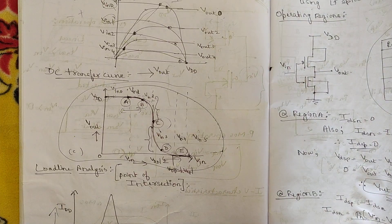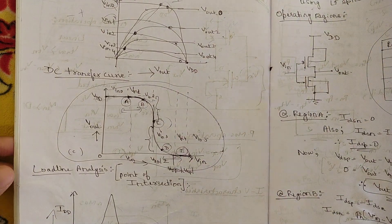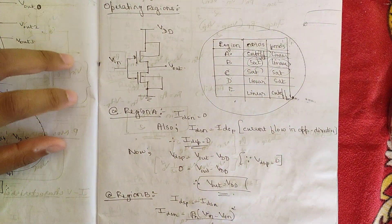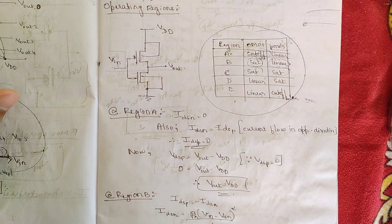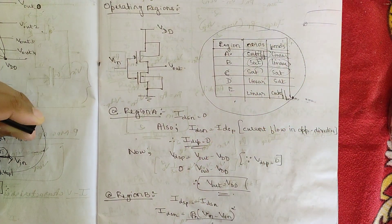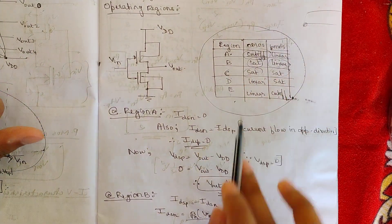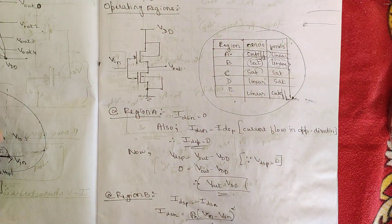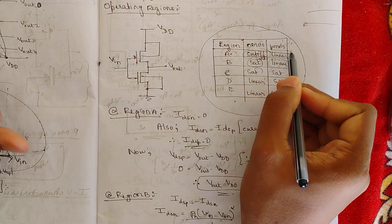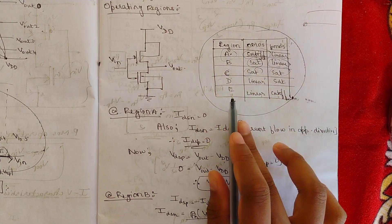Now let us examine the operating regions of the CMOS inverter. There are five regions: A, B, C, D, and E. In region A, the NMOS transistor is in cutoff and the PMOS transistor is in linear region. Since A and E are inversely opposite, in region E the PMOS transistor is in cutoff and the NMOS transistor is in linear region.